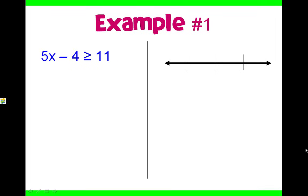Let's look at example number one. We're going to solve it the same way as we would an equation. Looking at the left side where x is, we want to get rid of five and four. We're going to get rid of that four first because it's farther away and easier to get rid of.